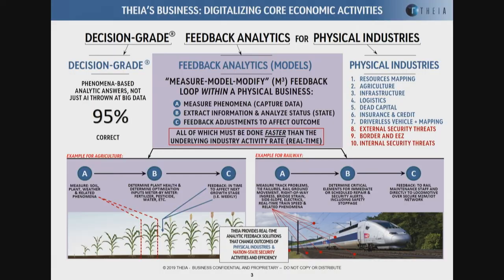Decision-grade analytics means it's phenomenology-based and approximately 95% correct. That literally means ground sample distance, radiometric accuracy, signal-to-noise ratio, and revisit rate. We take vast quantities of data and model the situation — agriculture and transportation are two examples, where we measure crop growth, model it, and produce feedback to actually change the treatments of the crop or impact the condition of a railway system. We're targeted on physical industries: resource mapping, agriculture, infrastructure, and dead capital — creating a global registry of properties to enable credit and insurance.